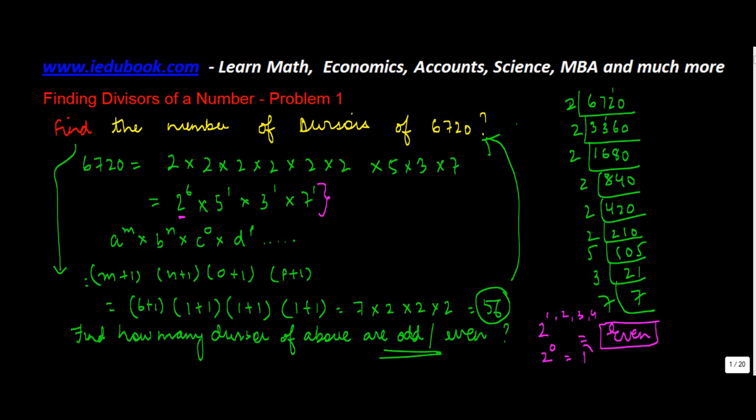Right? Except 2 to the power 0, which itself is equal to 1. Right? So as long as this power is greater than or equal to 1, the divisor which you will get out of these combinations is always going to be an even number. But we have to find out how many of them are odd. So what we do is that in this equation, we put in the value of 2 as 0 into 5 to the power 1 into 3 into 7.